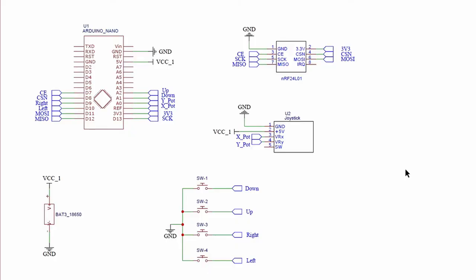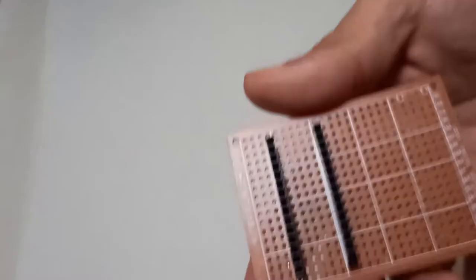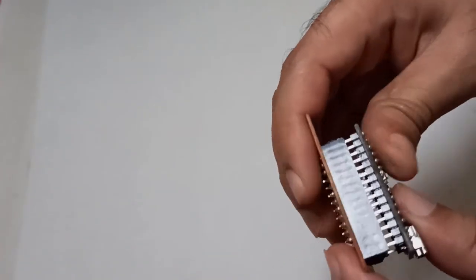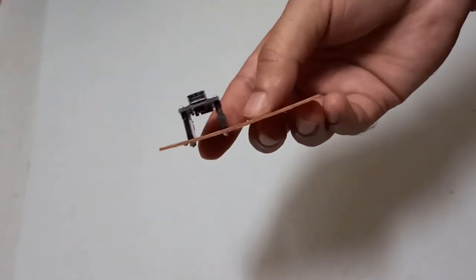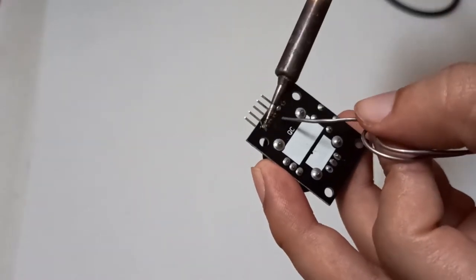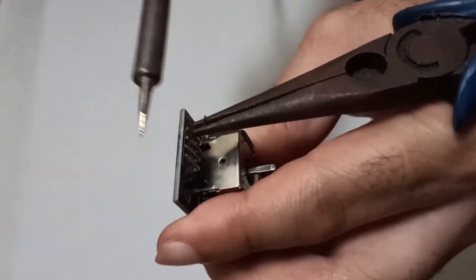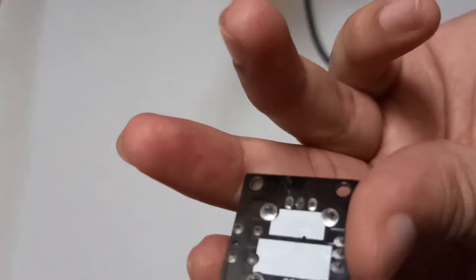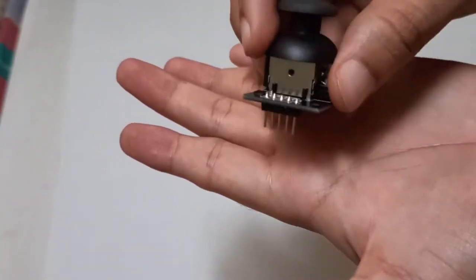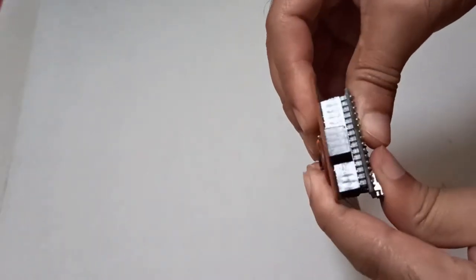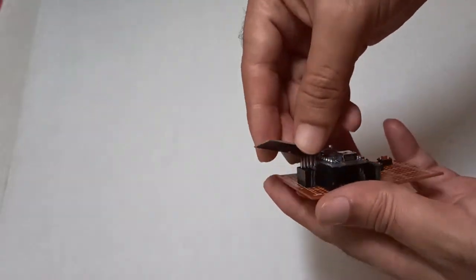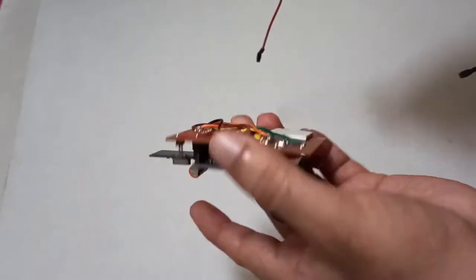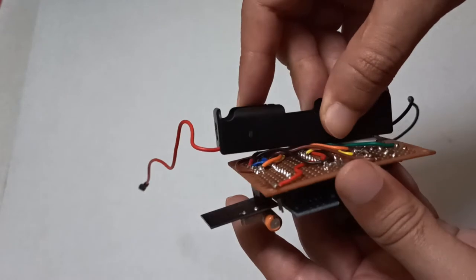Similarly, let's make the transmitter PCB. Replace the joystick connector with 10 mm mailbox strip. Final PCB of transmitter will look like this.